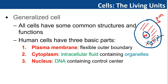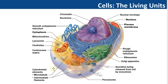We can find these three basic parts in most of the cells in our body: plasma membrane, cytoplasm, and nucleus. On this picture, you can see the plasma membrane — the outer boundary — the nucleus, and the cytoplasm, which contains the intracellular fluid and organelles.